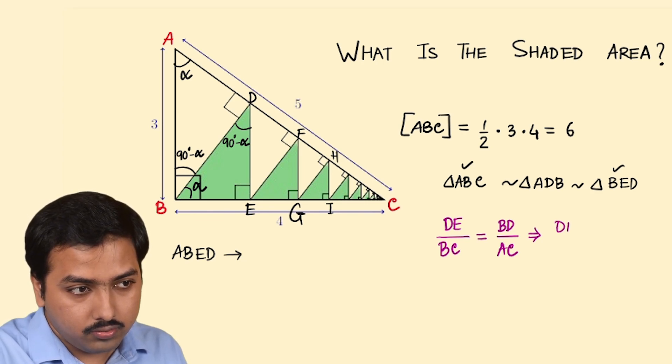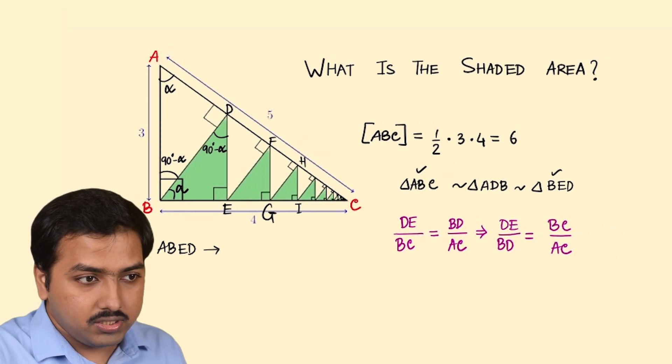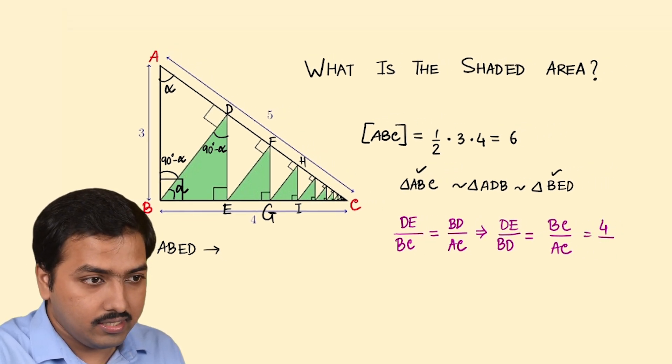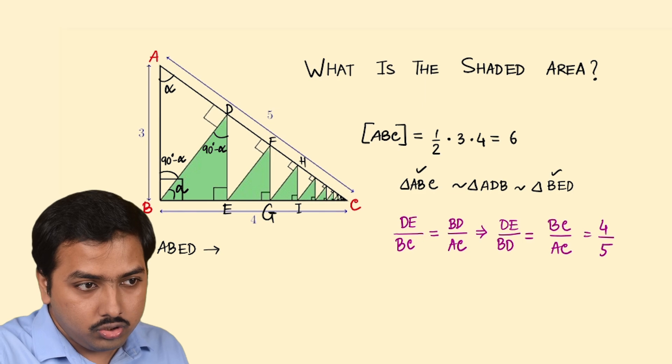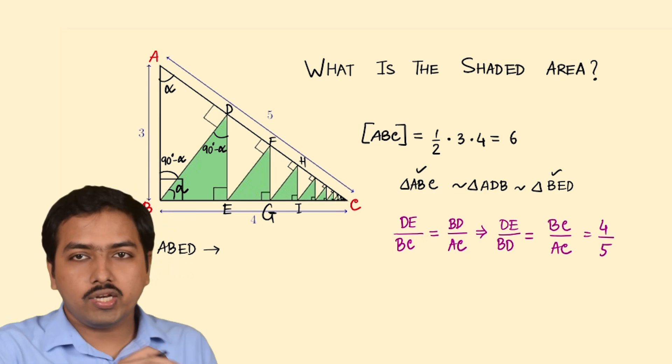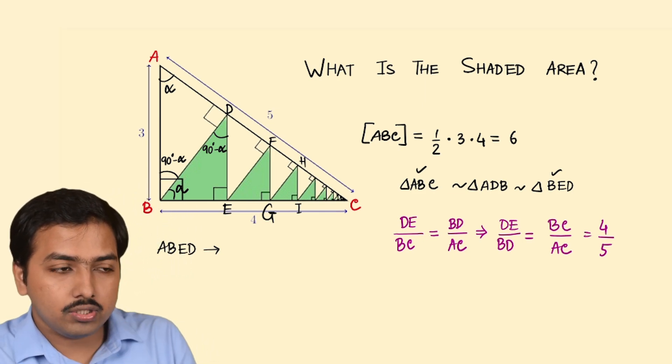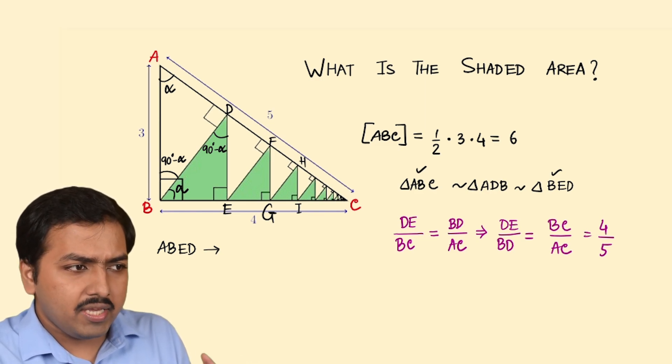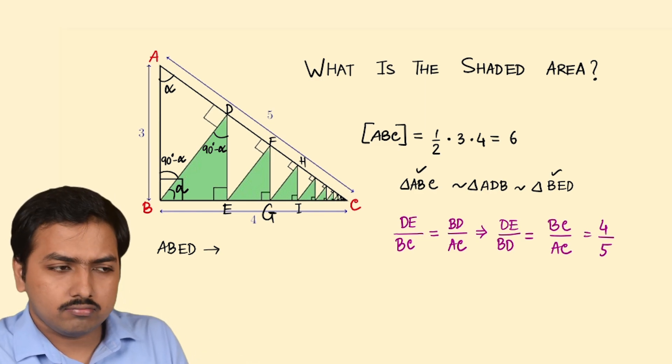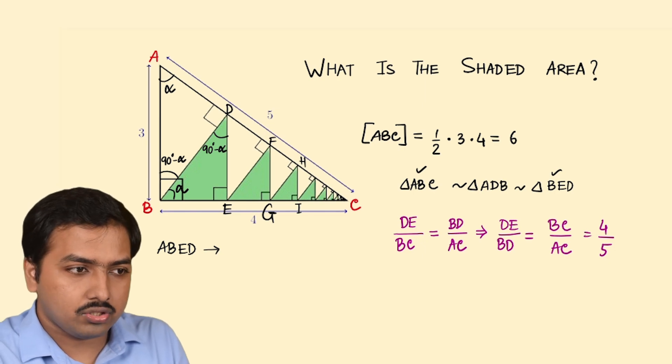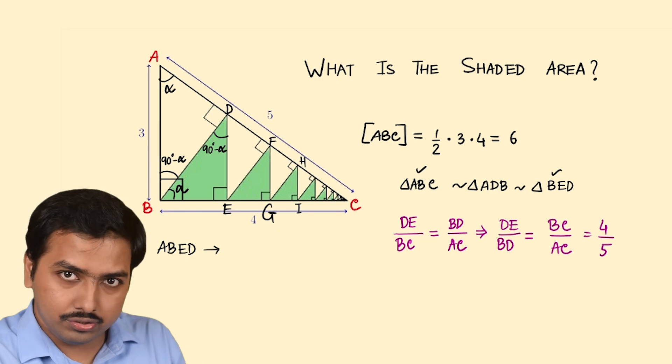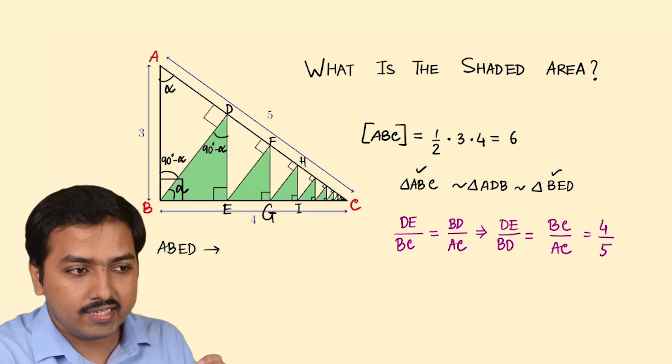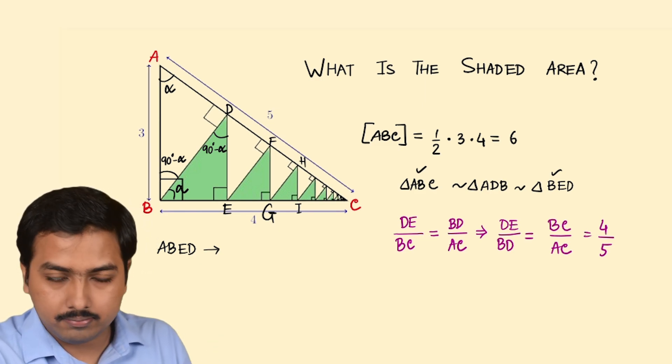From here we can have what is BC. BC is 4. AC is 5. So I guess now you can understand why I intentionally took these two triangles because I didn't know much about the measurements of triangle BED, those are unknown things in this picture, but I know about ABC. So I intentionally took this relation and on the basis of that I get an idea about DE upon BD.